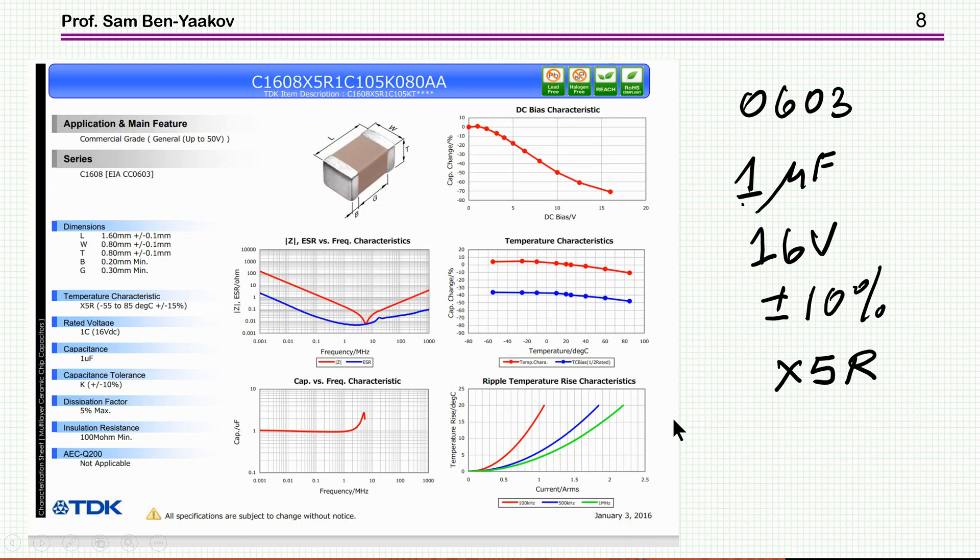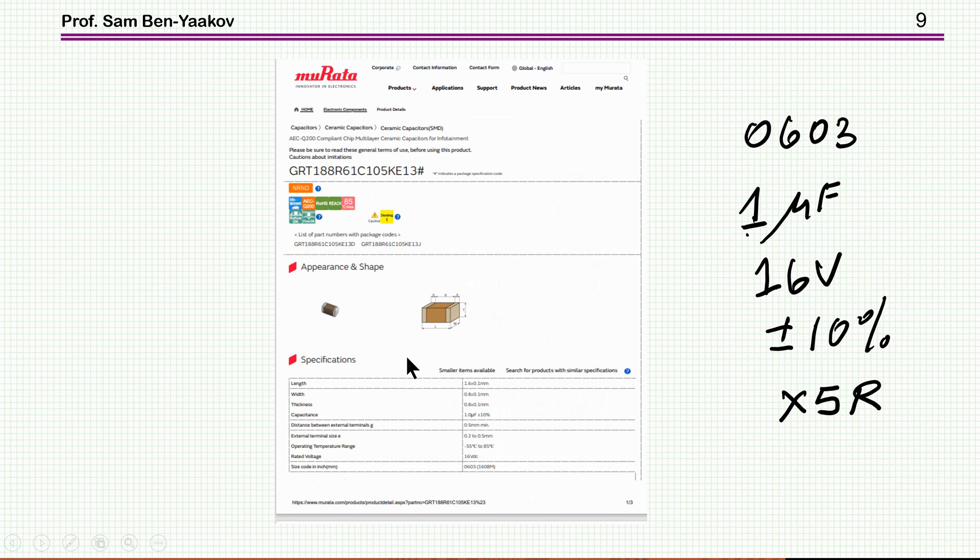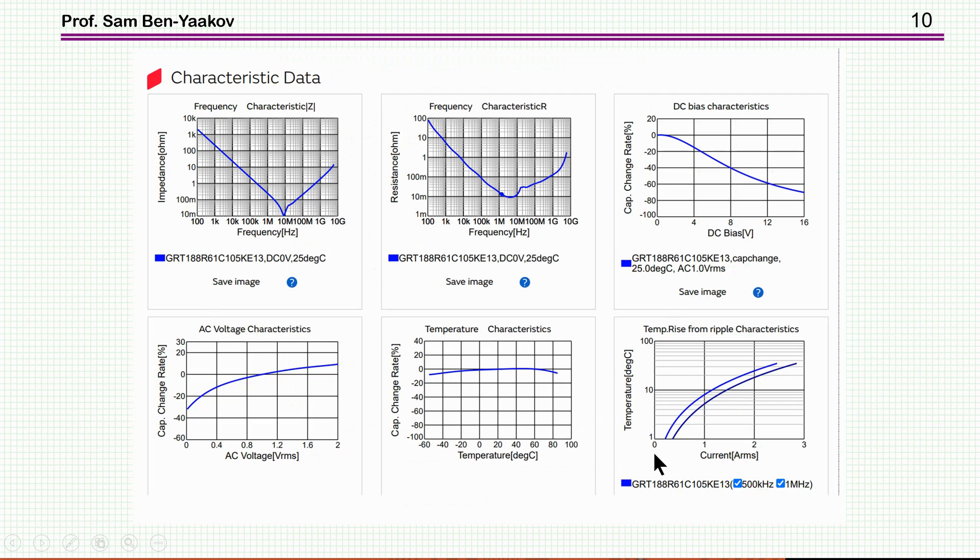I have chosen now two capacitors. One is from TDK, and this is a 0603 package, one microfarad, 16 volts, plus minus 10%, and the material is X5R. Here is the datasheet, or the basic datasheet. And then I've also chosen a similar capacitor, which could be a replacement, 0603, one microfarad, 16 volt, X5R, apparently exactly the same capacitor. And here are the characteristics of the second capacitor, which is made by Murata.